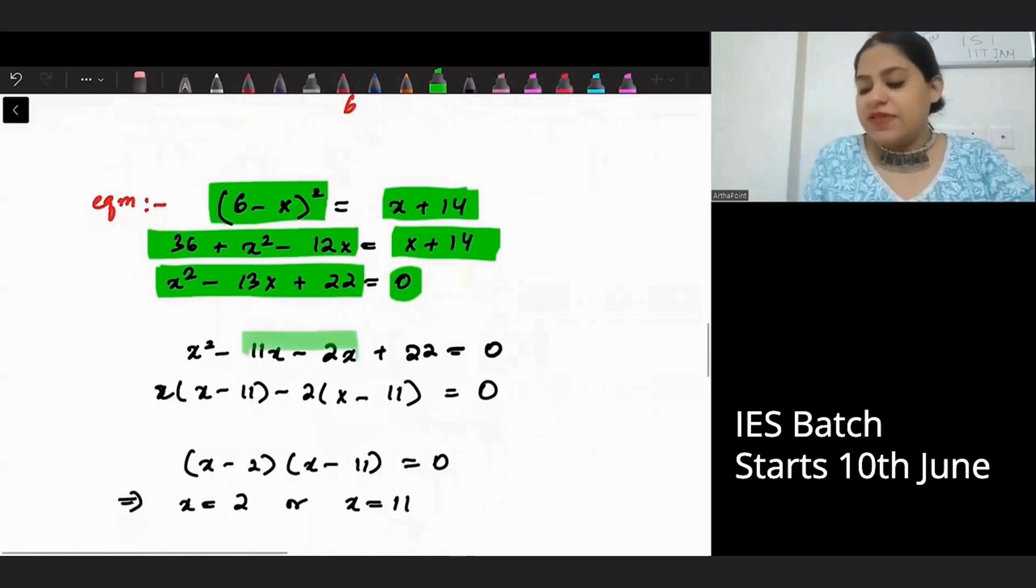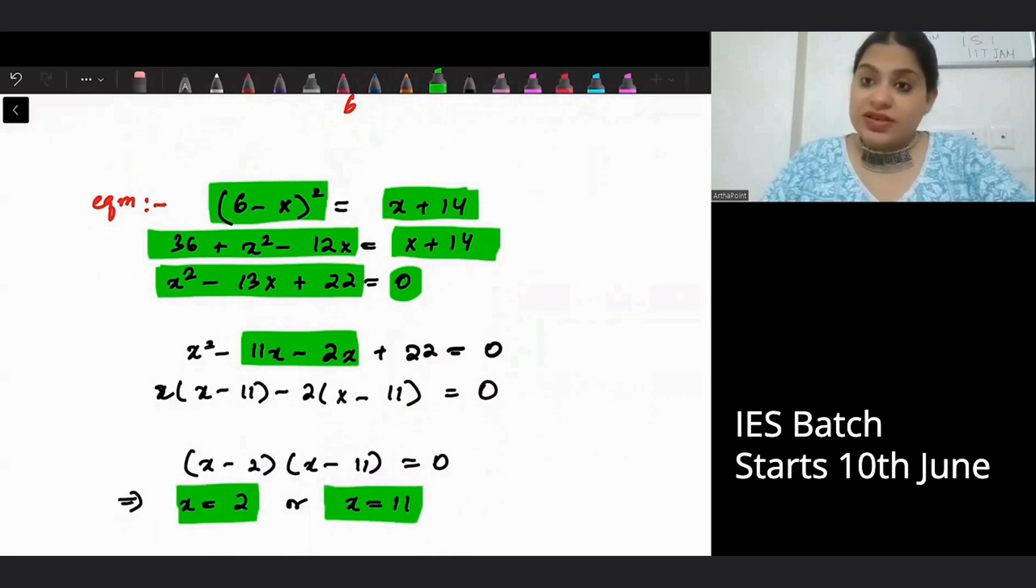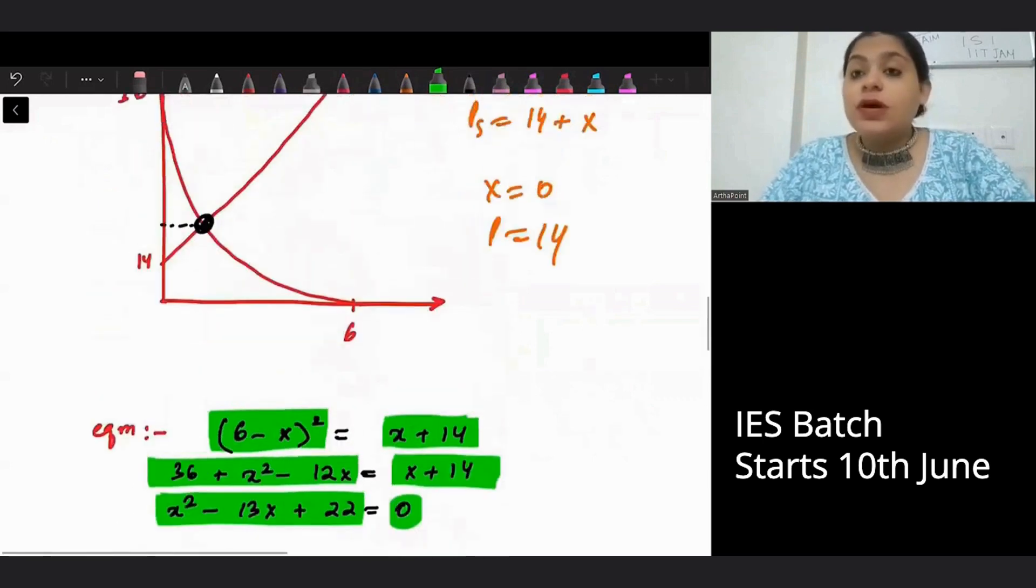Just use completing the square method. 13x can be written as 11x and 2x. And you will get either x is 2 or x is 11. So you will get two values of x. Two values of the quantity.